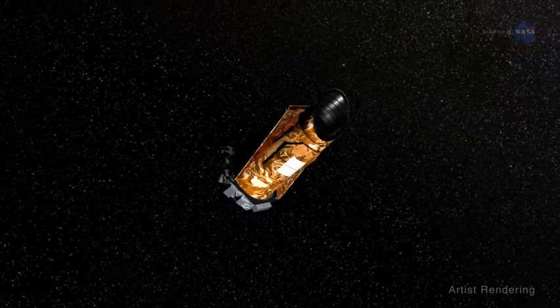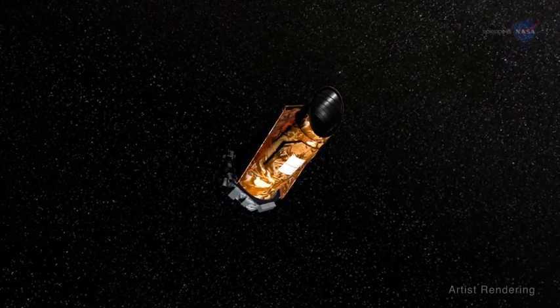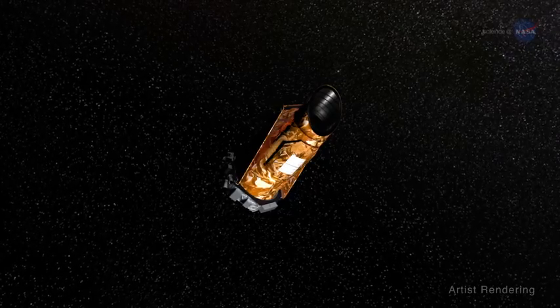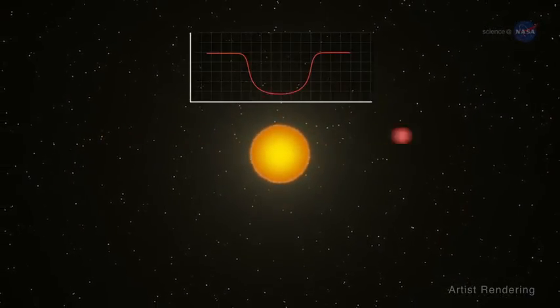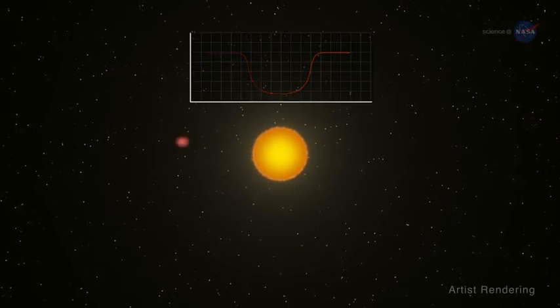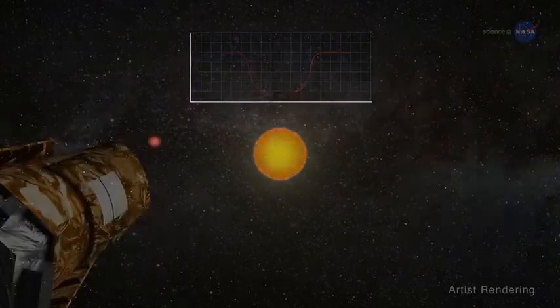Kepler is famous for finding planets, but researchers using this space-based observatory also learn a lot about stars. Kepler routinely surveys thousands of stars, looking for slight variations in brightness that signal the transit of a planet across the stellar surface. For each star in the survey, Kepler collects a long-term record of the star's brightness, a record that can be used for astro-seismology.